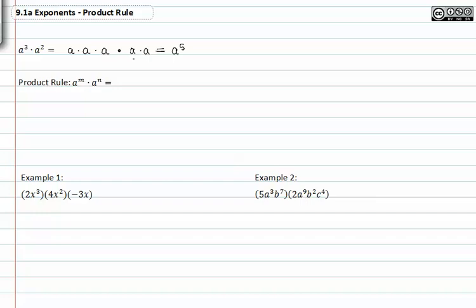Because it's saying how many times a is being multiplied all together. So if we multiply a to the m times a to the n, we get a to the m plus n.